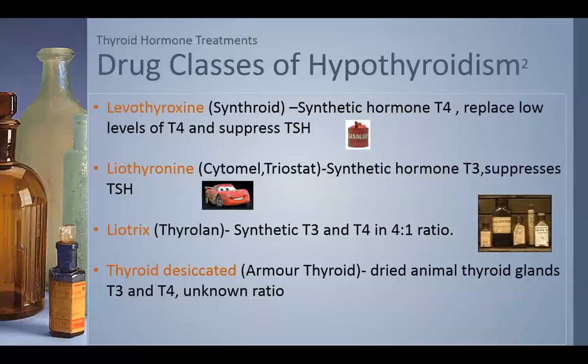Levothyroxine and lyothyronine also suppress TSH levels, because when the body senses low levels of T3 and T4, it keeps producing more and more TSH. Lyotrix is a synthetic form of both T3 and T4 in a ratio of four to one, whereas the normal body ratio is 20 T4s to each one T3 — essentially more potential energy. Thyroid desiccated is dried animal thyroid glands containing both T3 and T4, not in any particular ratio. These medications are given because they're very inexpensive and are often used in third world countries where price is an issue.